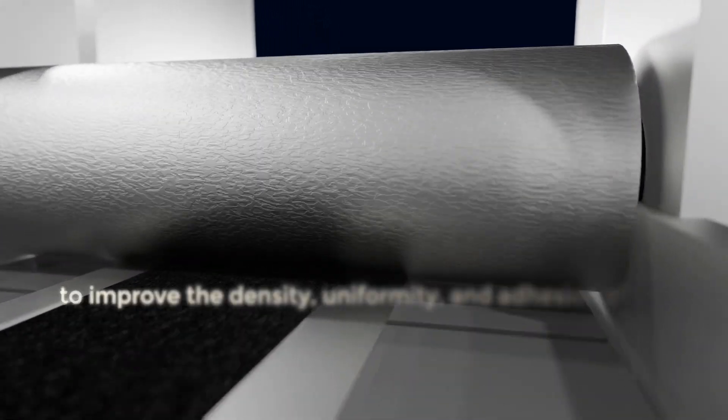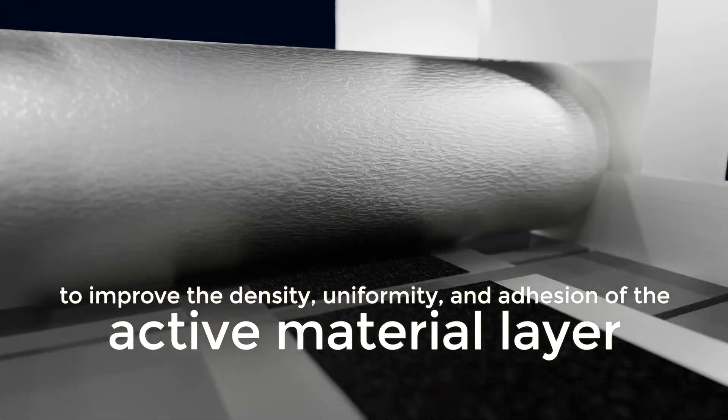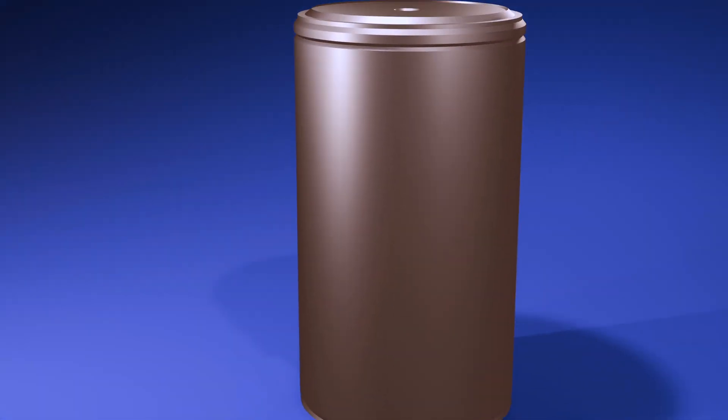Finally, the cathode is passed through a set of rollers to improve the density, uniformity, and adhesion of the active material layer and is now ready for use in our lithium ion battery.